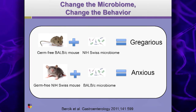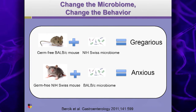So we already know this exists — that fecal transfer changes the phenotype. Well, we're in the brain business. What is the effect on the brain phenotype or the behavioral phenotype? There are different types of mice out there. There are some anxious mice, the BLB mice. These are anxious mice — so at a dinner party, they're over in the corner, they don't socialize.